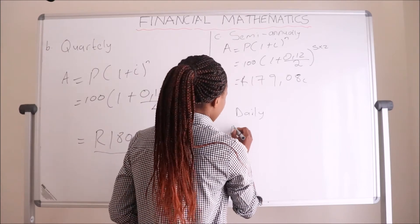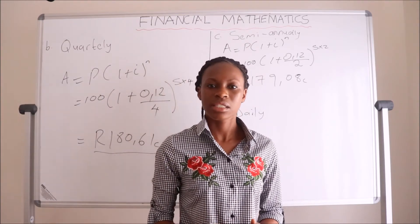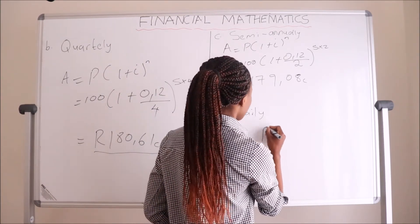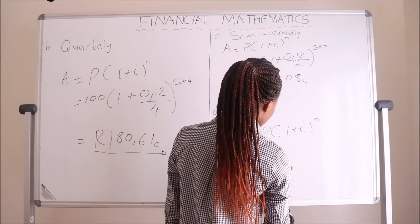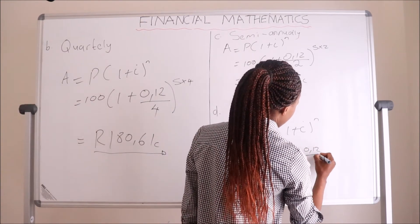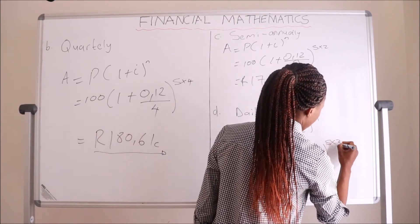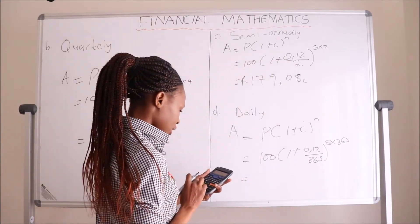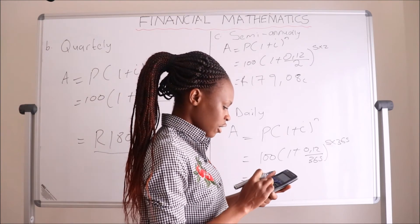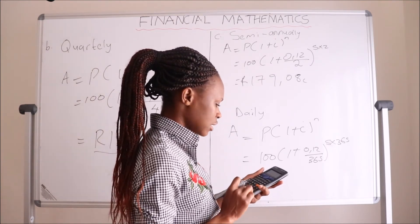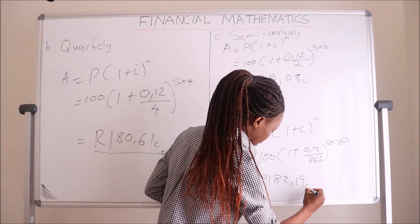For daily compounding: A equals P times (1 plus i) to the exponent of n. P is 100 rand, i is 0.12 divided by 365, and the exponent is 5 multiplied by 365. So: 100 times (1 plus 0.12 divided by 365) to the exponent of 1825 gives us 182.19 cents.